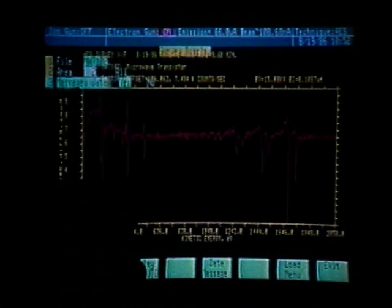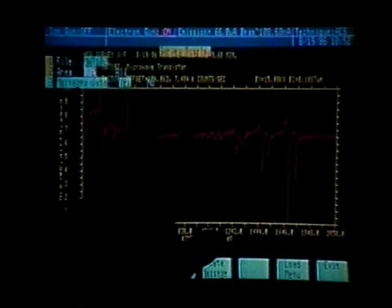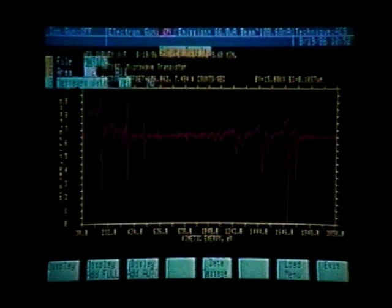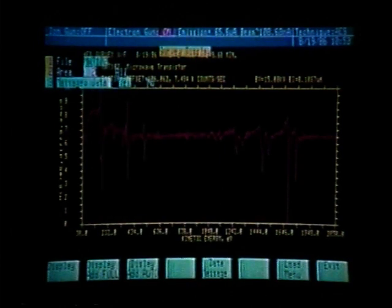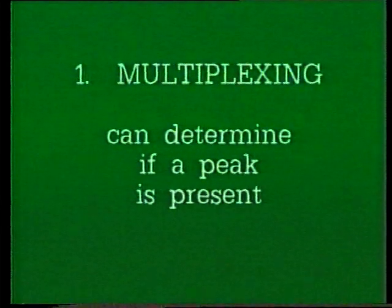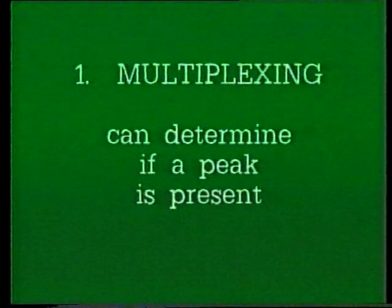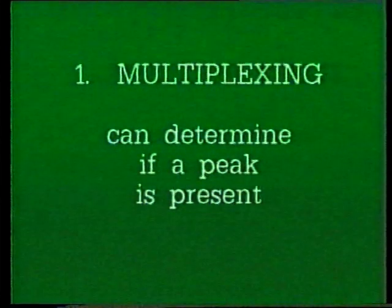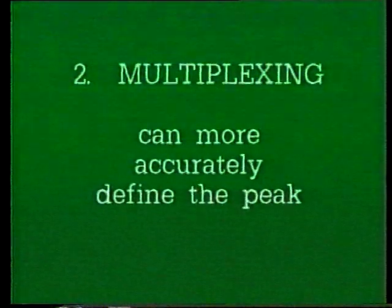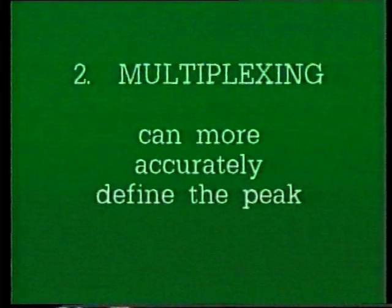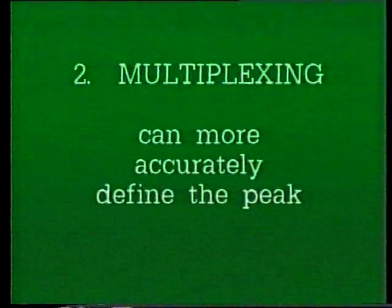What multiplexing can do is, if we thought that we had a peak in this area, we could set up a smaller range, just a window, and spend the same amount of time as it takes to do a survey scan, where we would get much better signal to noise because we would be spending that time acquiring data and signal averaging in a smaller area. That is one function of multiplexing — to look in a short range and determine in the same or less time whether a peak is there or not.